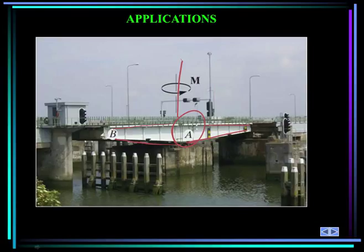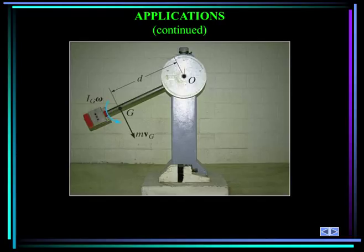Why is the bridge designed that way? It reduces the moment of inertia of the bridge about A. Here you see a Sharpie tester. As the pendulum swings downward, its angular and linear momentum increase. By calculating the momentum at the vertical position, we can calculate the impulse the pendulum exerts when it hits the test specimen.